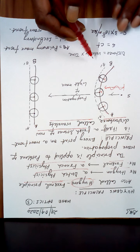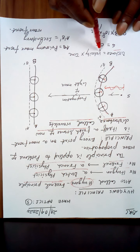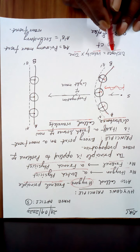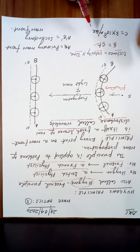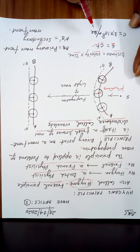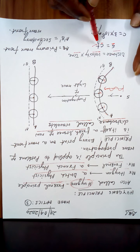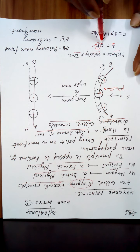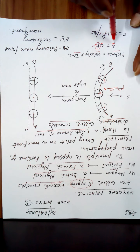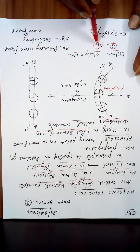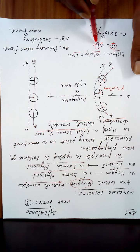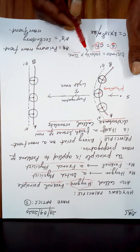We know distance is equal to velocity into time. Distance is S, velocity of light is C, time is T. Let us say T is equal to one second. C is constant, so the distance traveled will be C into T. You can take T as one second, two seconds — whatever it is. Let it be T.